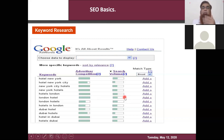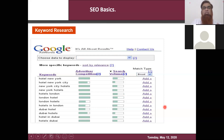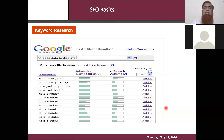Search volumes are sometimes in the thousands. If you choose a keyword with good search volume, you start ranking in Google and your website gets more traffic. Once more traffic comes, you'll automatically start getting more inquiries. We'll also go through the proper interface of Google Keyword Planner and do some testing to see how it actually shows results.